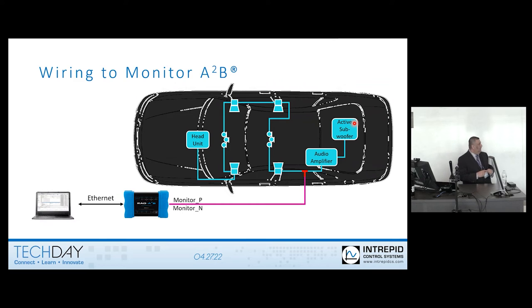So where you connect is extremely important, especially if you want to see certain communication. So like a microphone, it may never make it to a sub node. It may make it to the head unit. It just depends on how the system is configured. This is just a different picture where you can connect. So if you need to monitor between two nodes, you can certainly move that connection.